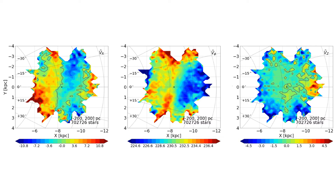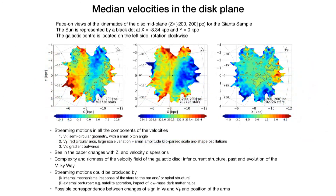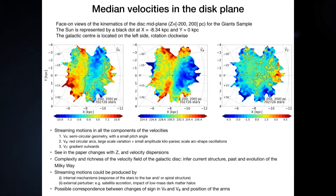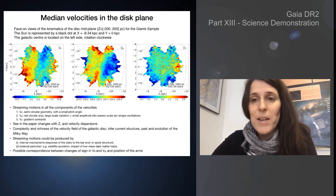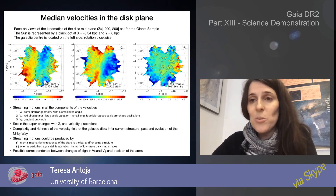All these panels show that the velocity field of the galaxy is very complex. Since this is related to mechanisms that are acting on the galaxy, all this richness in the velocity structure must help us infer the current structure of the Milky Way, but also its past and its evolution. These streaming motions can be due to internal mechanisms — the response of the stars to the bar or the spiral arms of the Milky Way — but they can also be related to an external perturber, such as a satellite that has merged with our disk or an impact of a low-mass satellite. In the paper, we see a possible connection with these sign changes of the velocities, especially in VR and Vazimuth, with the position of the spiral arms of the Milky Way, and this needs to be explored further.